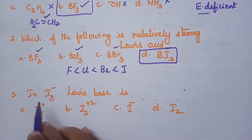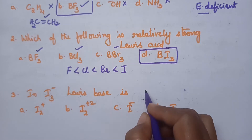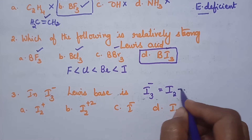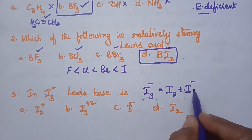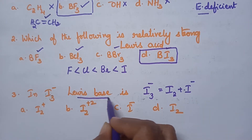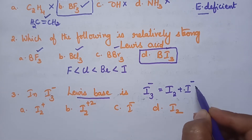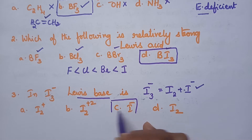In I3⁻, the Lewis base is identified as follows: I3⁻ can be written as I2 plus I⁻. Here I⁻ is the electron rich species, and we have to identify which species is responsible for the basic behavior. So I⁻ acting within I3⁻ is responsible for the Lewis base behavior, and option C is the right answer.